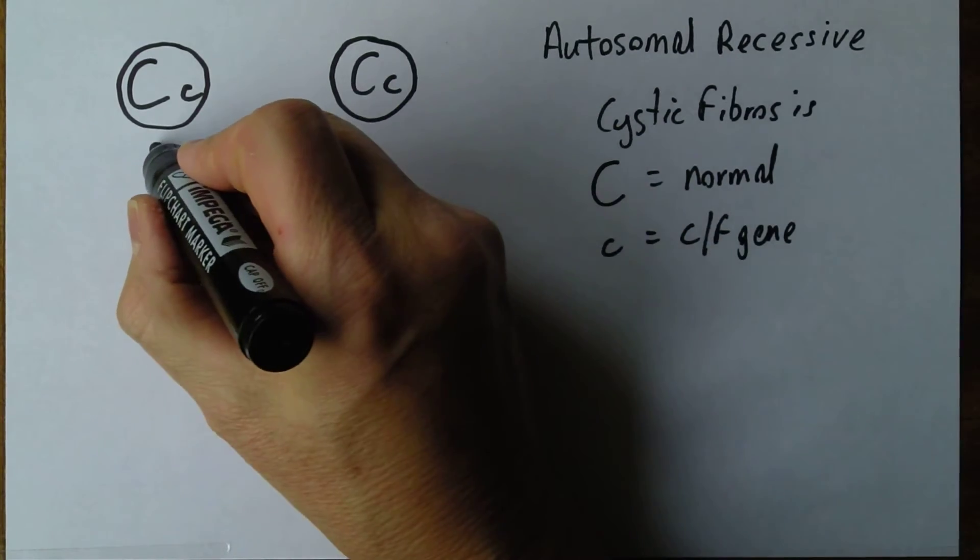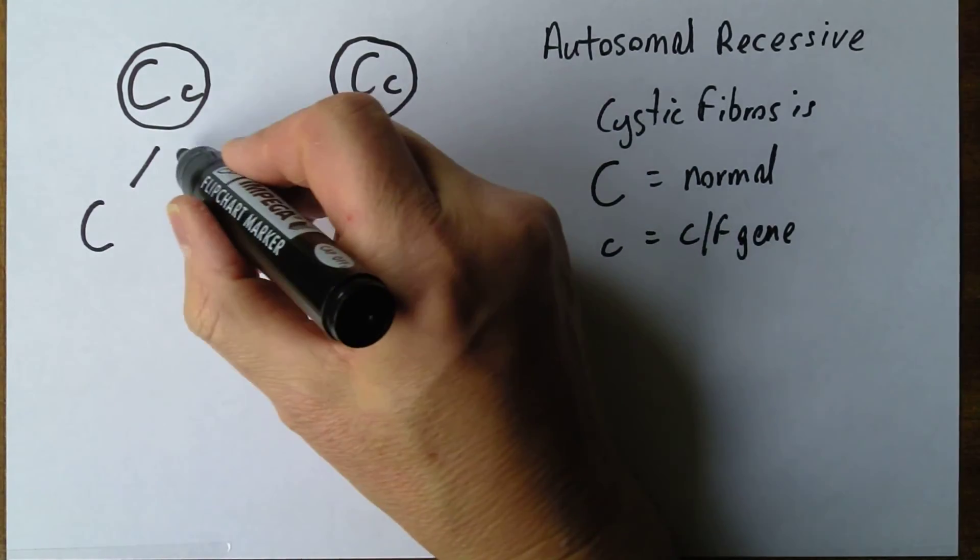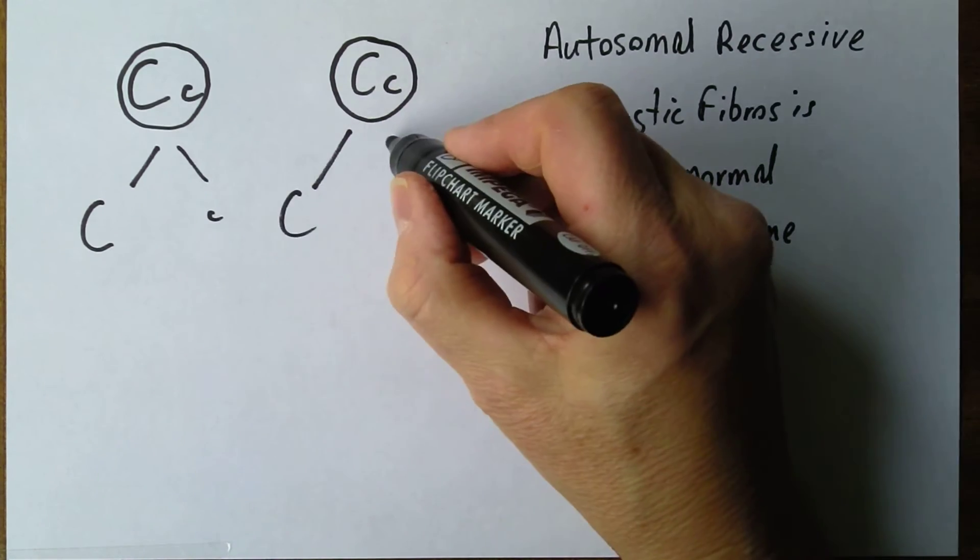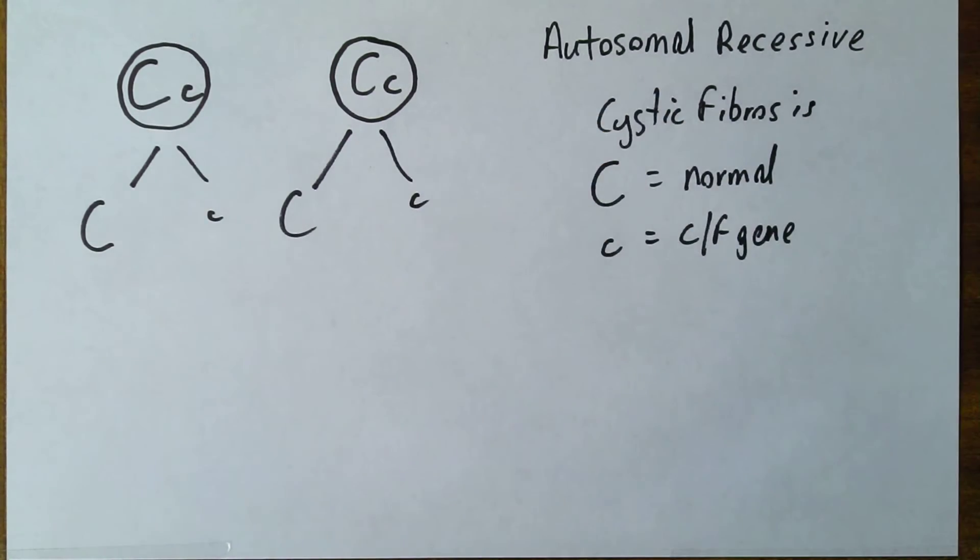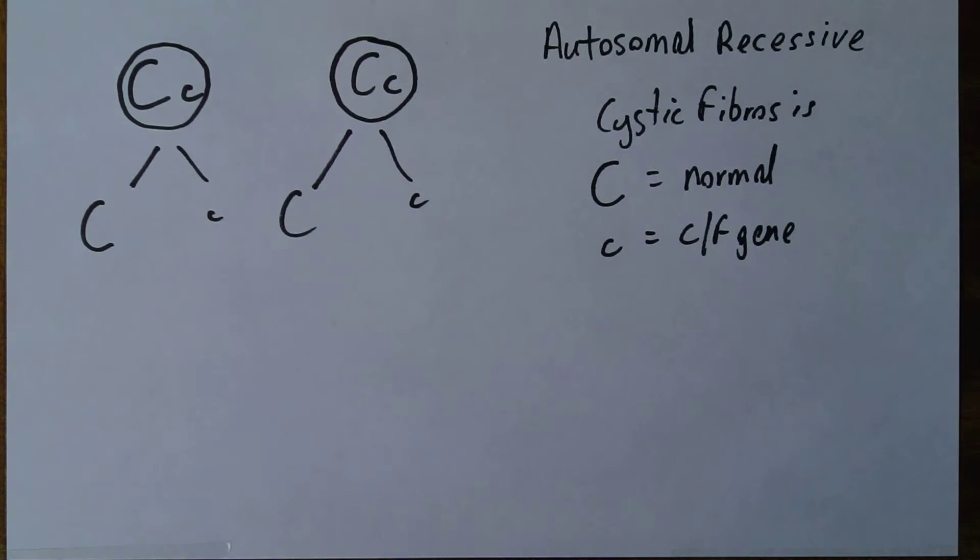So what happens here we're going to get gametes with big C small c or big C small c and then these gametes are going to recombine in the usual way.